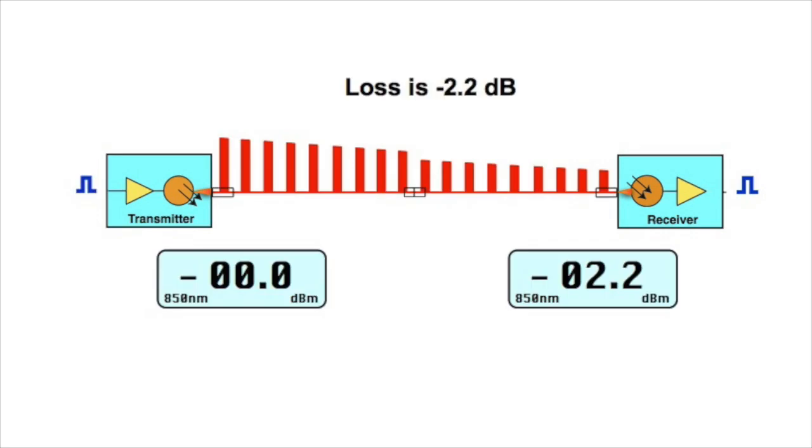So you can see that our transmitter coupled 0 dBm into the optical fiber. And our receiver saw minus 2.2 dBm at the far end. So the attenuation of the optical fiber and the loss in the connector in the middle gives us a loss for the cable plant of 2.2 dB.